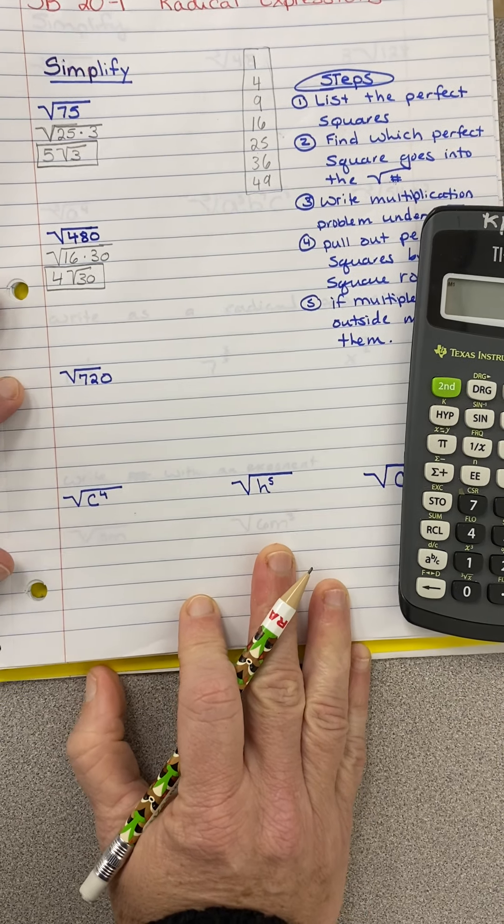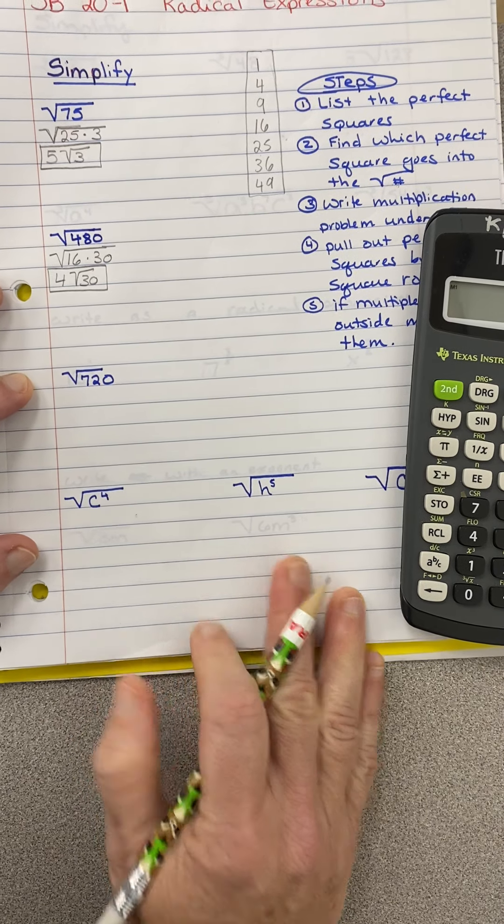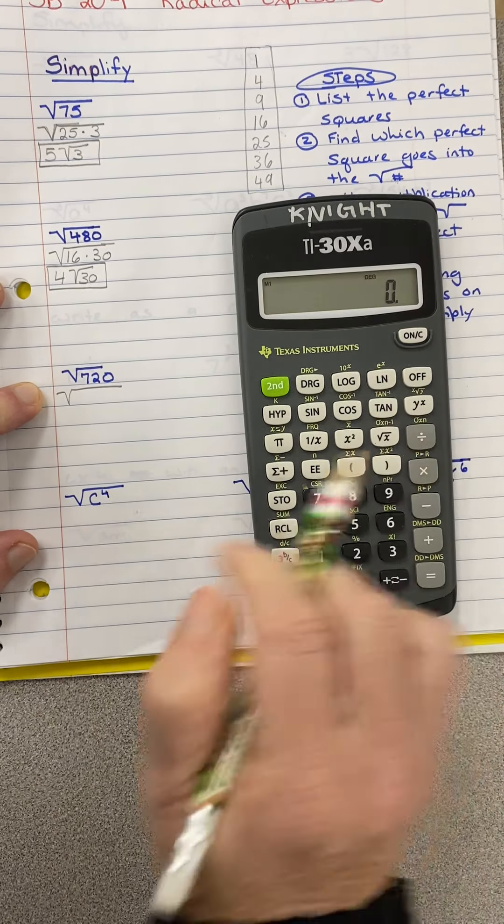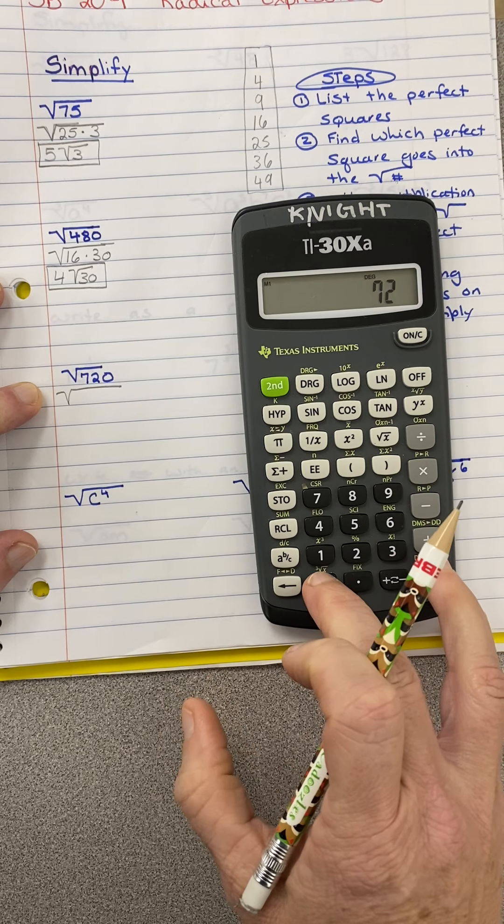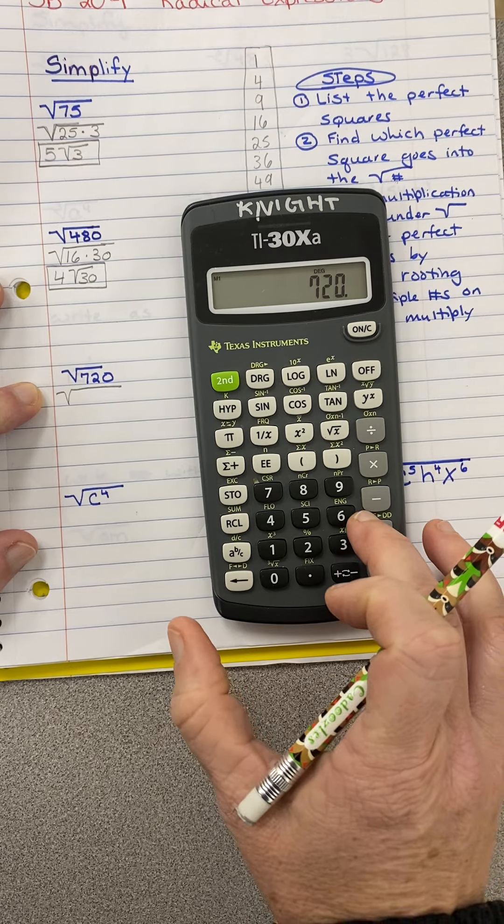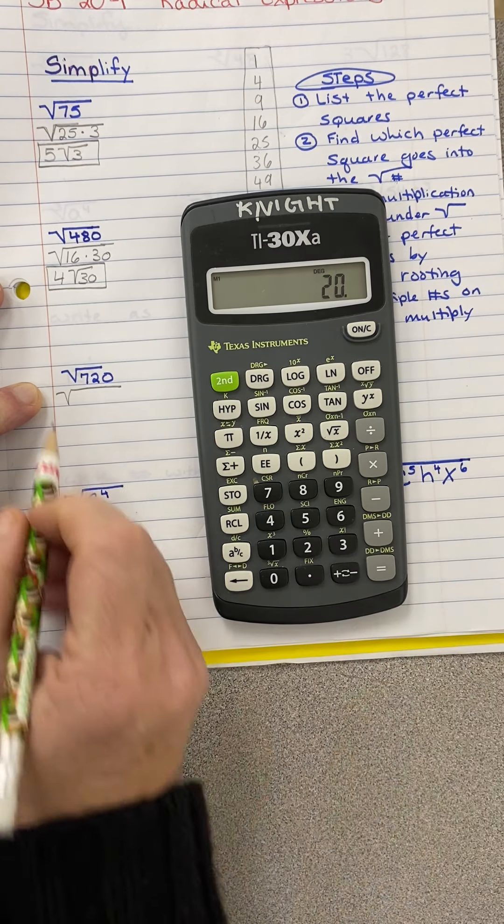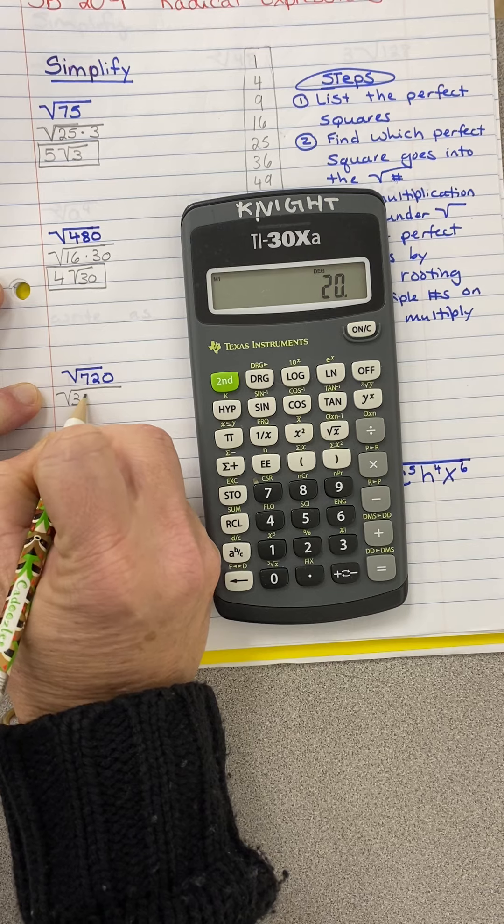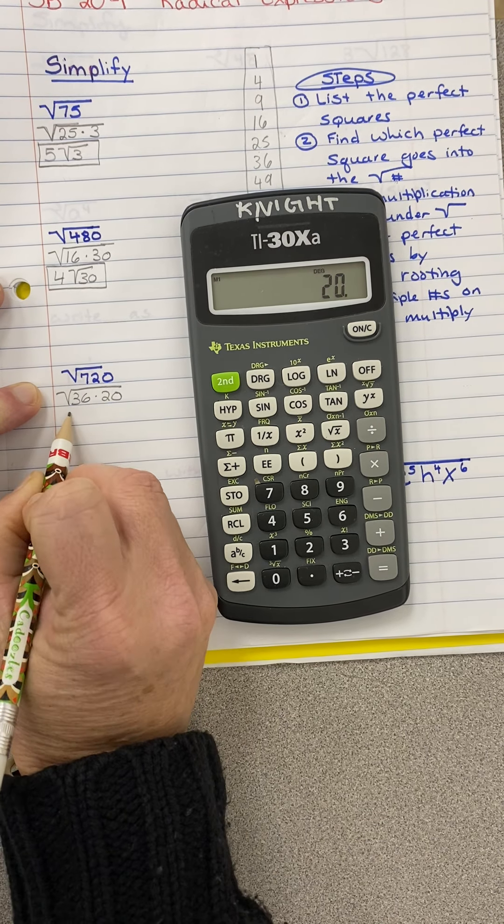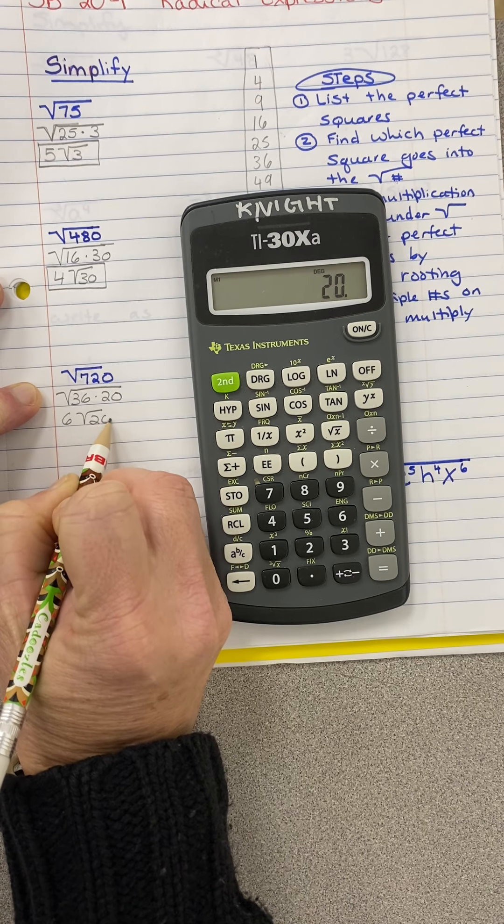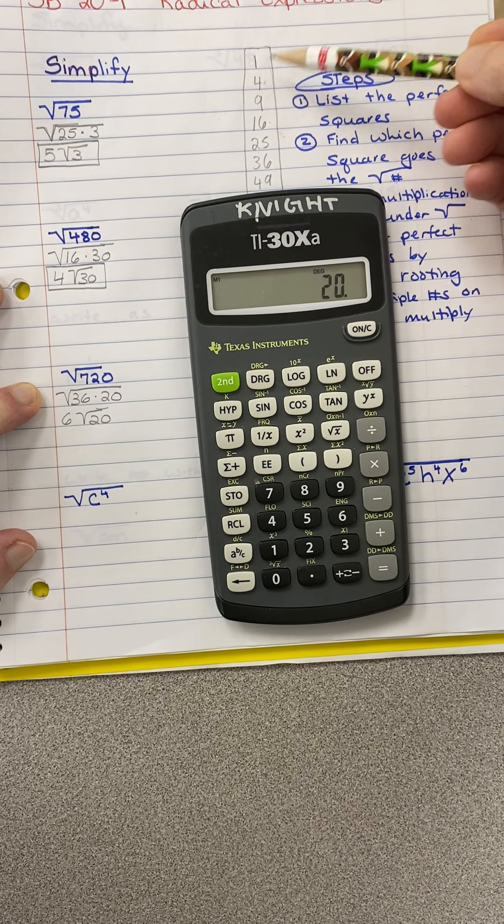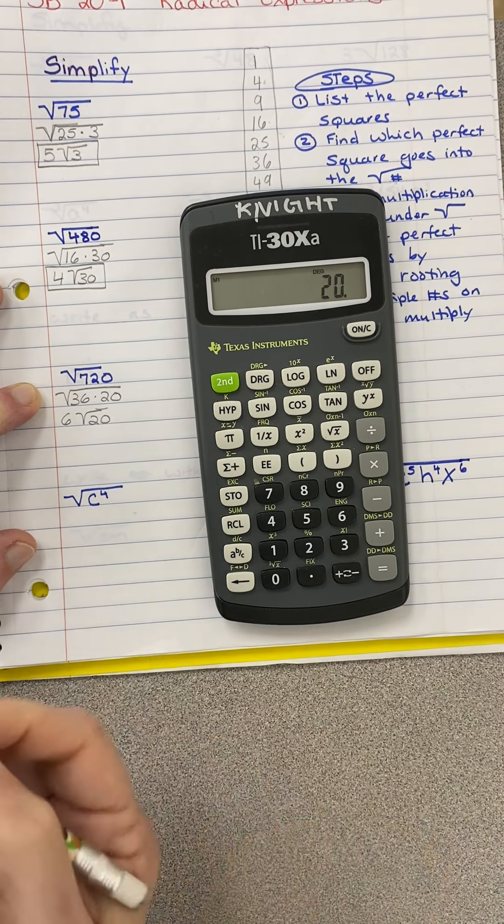Let's look at 720. What perfect square goes into 720? Well, nine, 36 might work. So 720 divided by 36. 36 does work. 36 times 20. The square root of 36 is 6. And then I have 20 under the radical. And does 16 go into 20? Oh, 4 also goes into 20. So now let me show you what happens in this case.